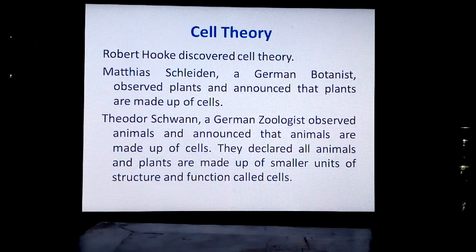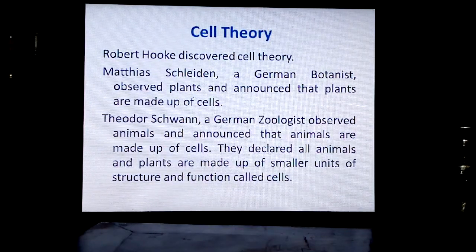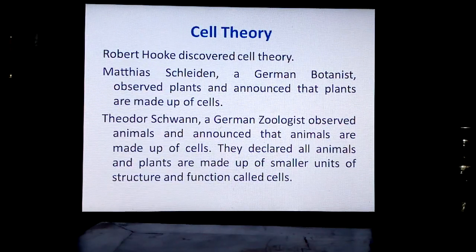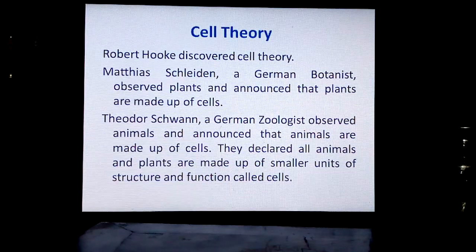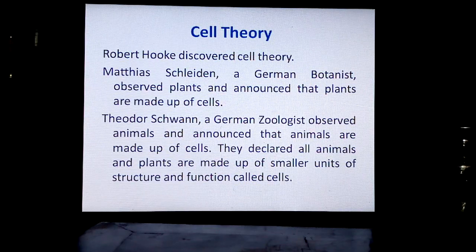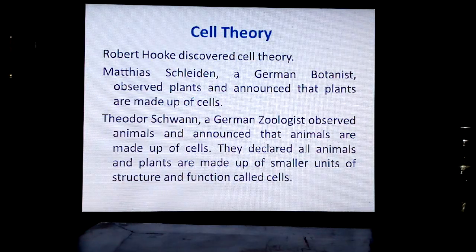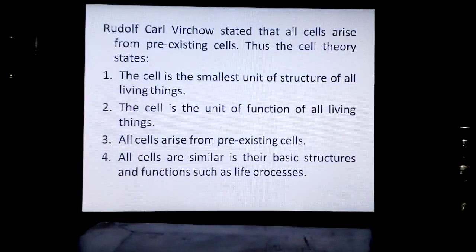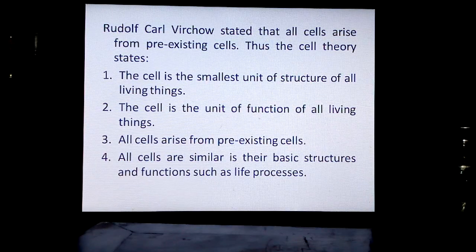Now moving to the next part of the lesson: cell theory. Robert Hooke discovered the cell, and cell theory was propounded. Matthias Schleiden, a German botanist, observed plants and announced that plants are made up of cells. Theodor Schwann, a German zoologist, observed animals and announced that animals are made up of cells. They declared all animals and plants are made up of smaller structural and functional units called cells. Rudolf Carl Virchow stated that all cells arise from pre-existing cells.